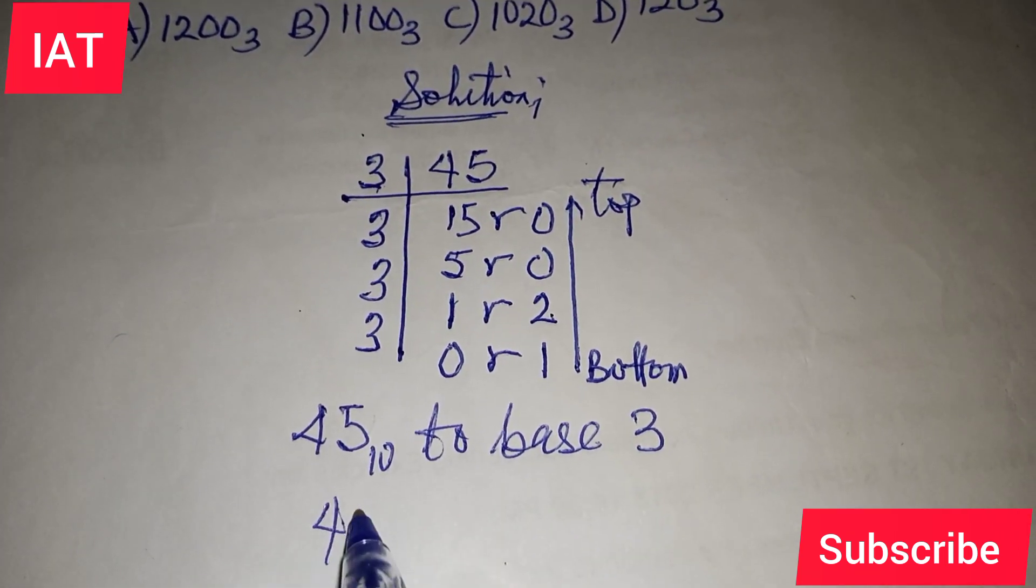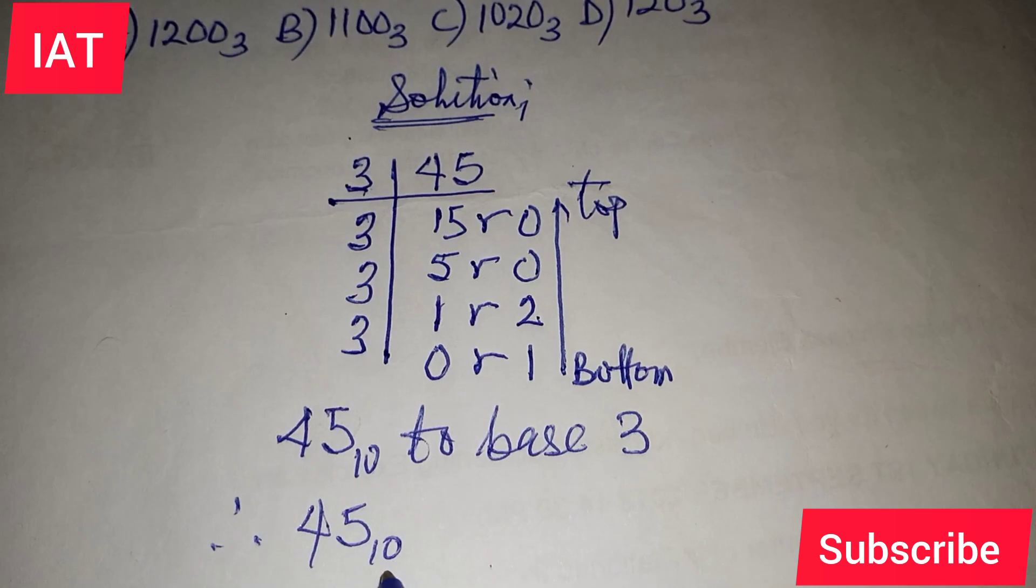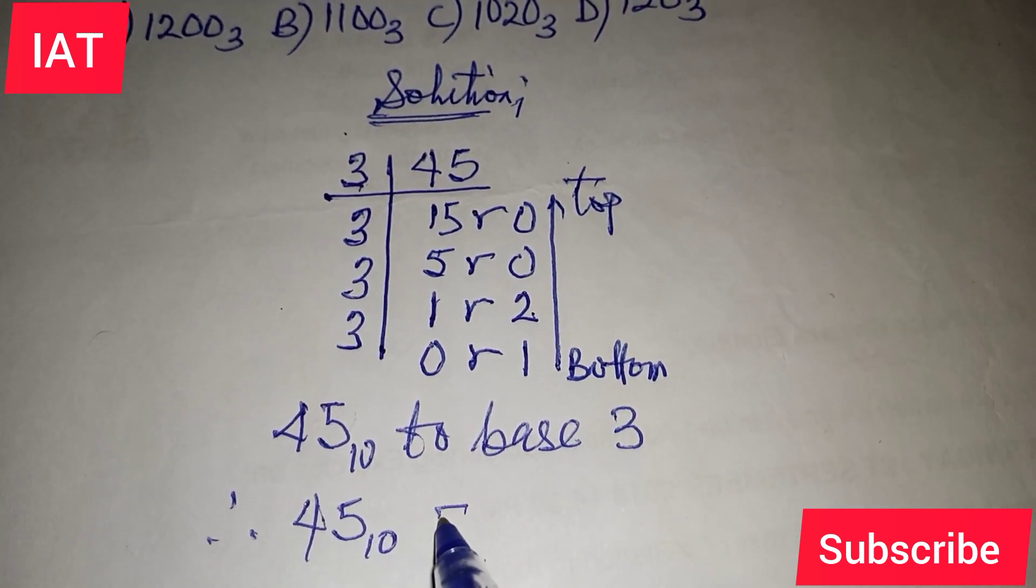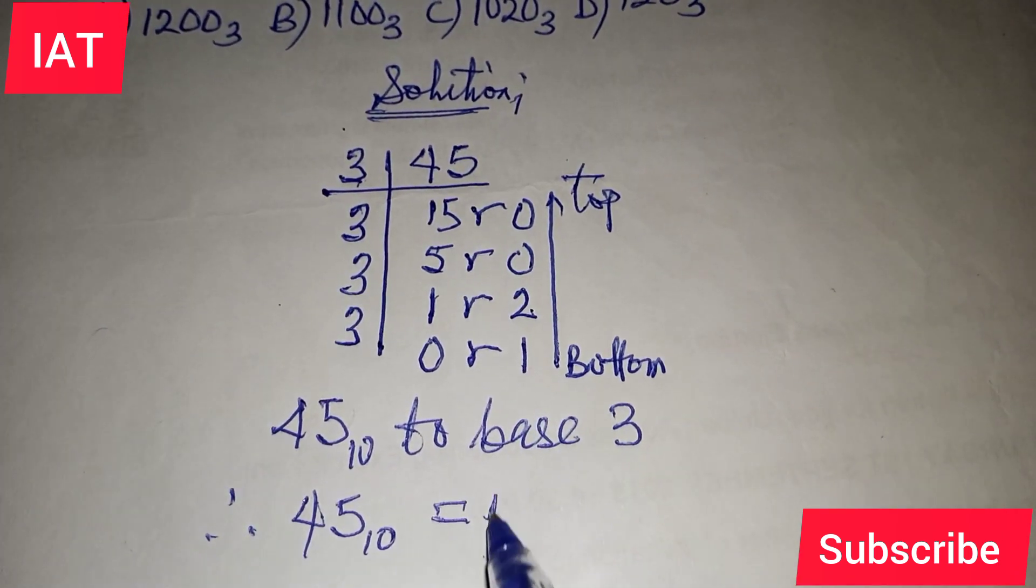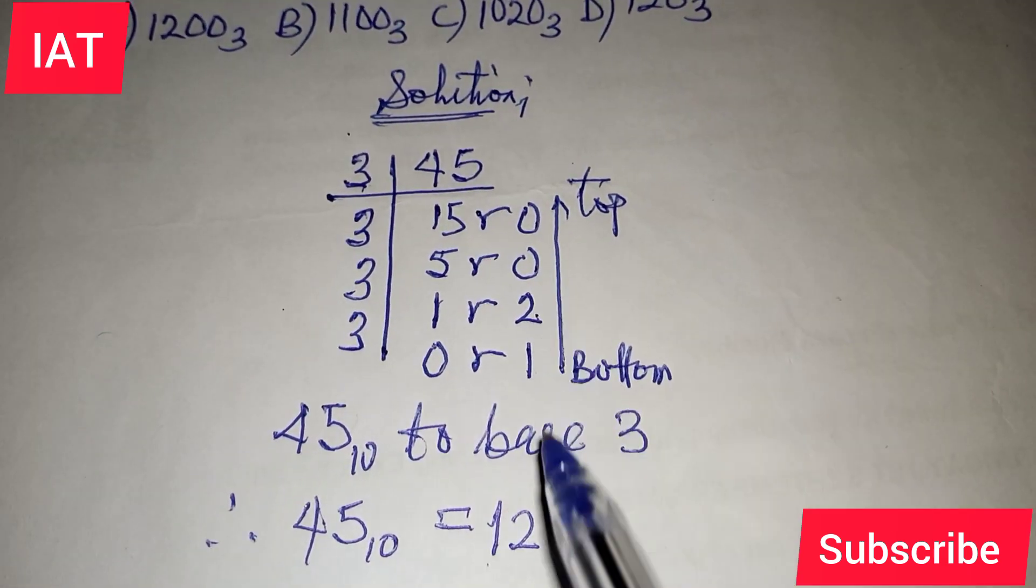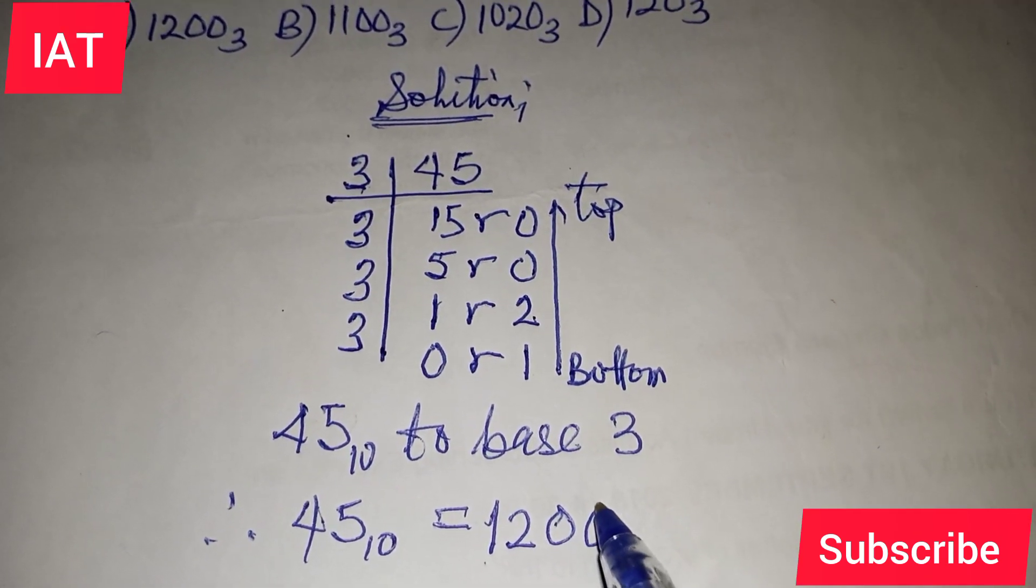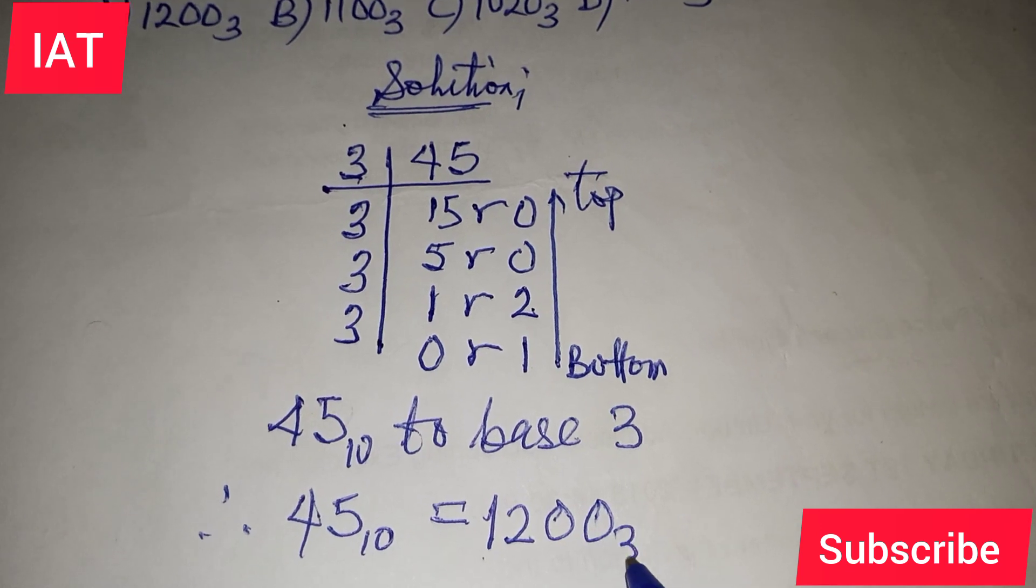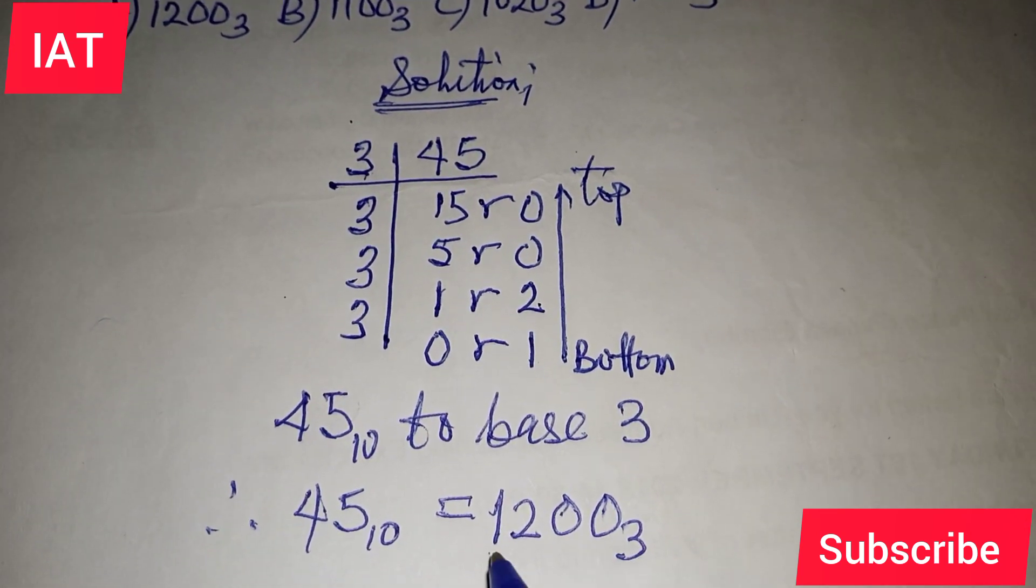So finally, let's put therefore 45 base 10 to base 3 will be equals. So from bottom we have 1, 2. The next one is 0. The next one is 0. To which base? To base 3. That's what we just worked on. So let's see if we have option like this.